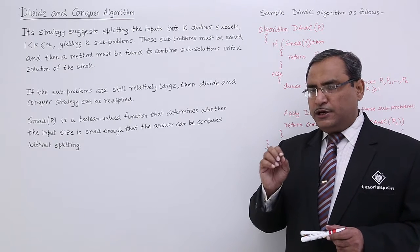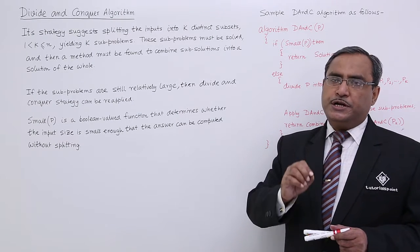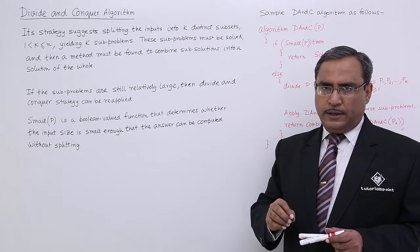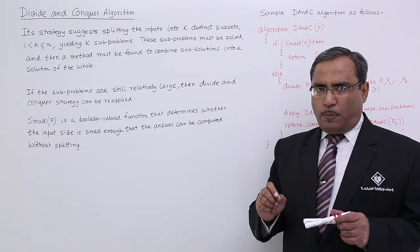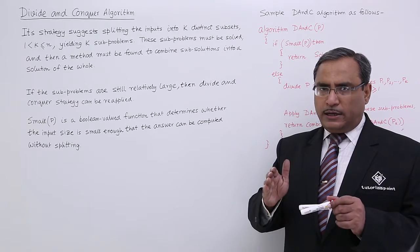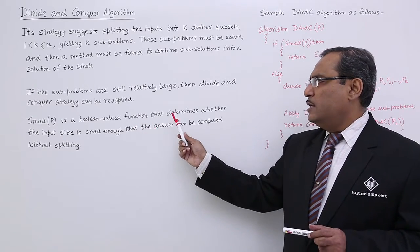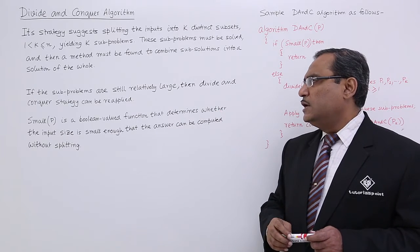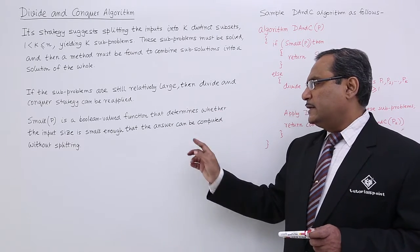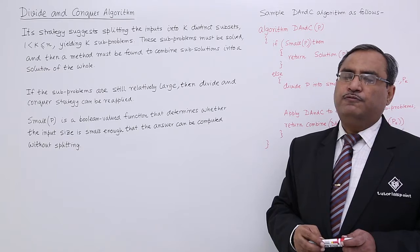Small p is that very function which will be returning one Boolean value and that will decide whether really the problem is solvable up to that size or not. Small p is a Boolean value function that determines whether the input size is small enough that the answer can be computed without further splitting.